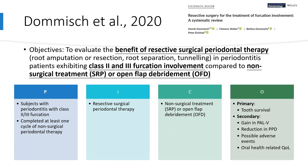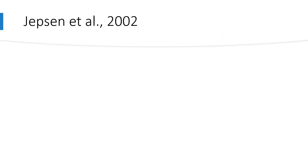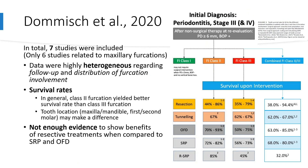The paper by Domish et al. aimed to evaluate the benefit of resective surgical periodontal therapy — such as root amputation or resection, root separation, and tunneling in class 2 and 3 furcation involvement — in comparison to non-surgical therapy or open flap debridement, with the primary outcome of tooth survival. A total of seven studies were included, six related to maxillary furcations. Data were highly heterogeneous regarding follow-up and distribution of furcation involvement, combining analyses for maxilla and mandible, and also including furcated premolars and third molars. The authors concluded that there is not enough evidence to show the benefits of resective treatment compared to non-surgical approach and OFD.